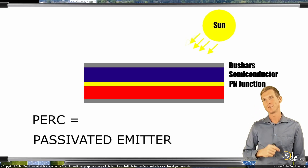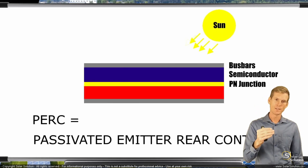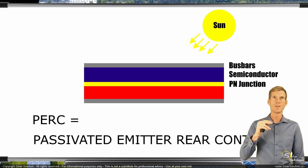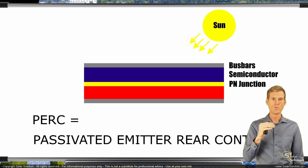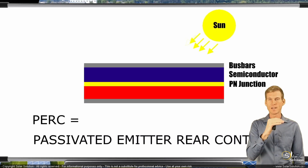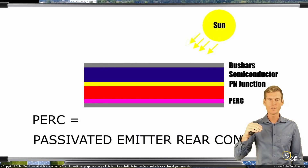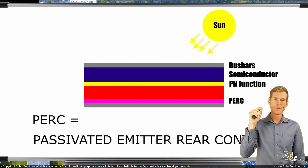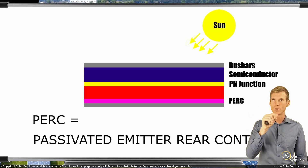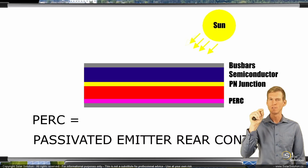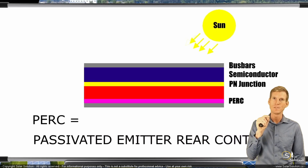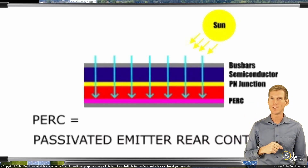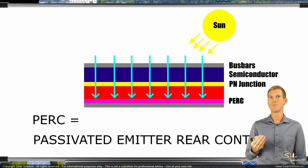The passivated emitter rear contact: on the rear side of the photovoltaic cell — the side that is not receiving the direct sunlight — we place an extra layer, the PERC layer. What's happening is that as the solar power hits the cell, some of it is being converted into electricity at the PN junction. But some of this solar energy is actually pushing through the PN junction and then it's not being used anymore.